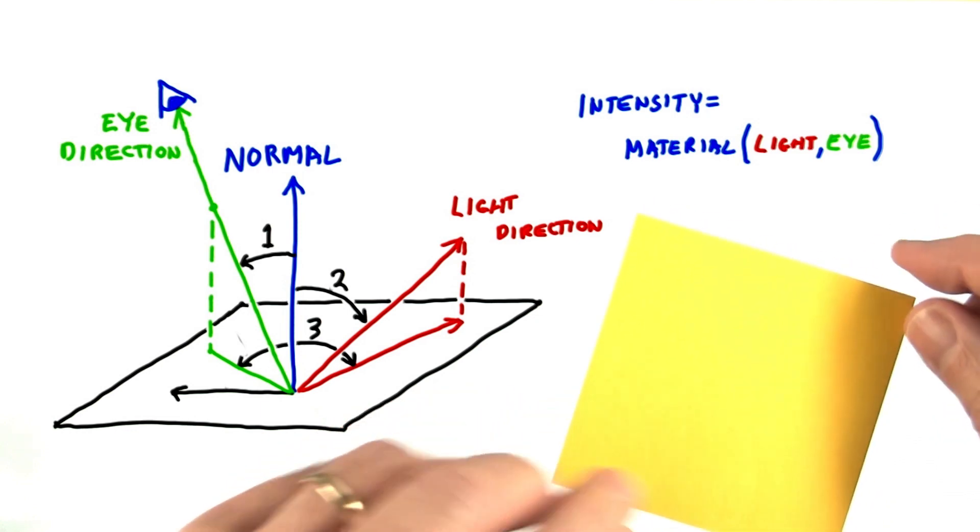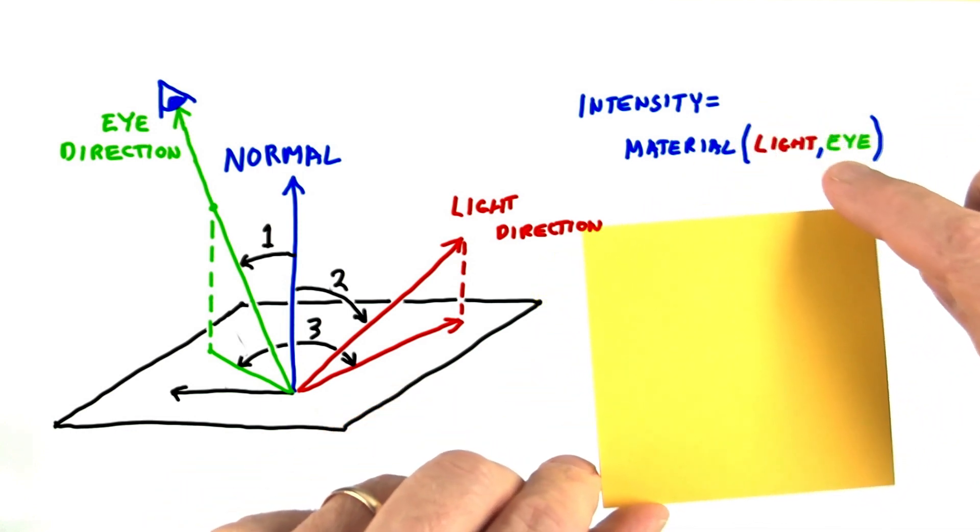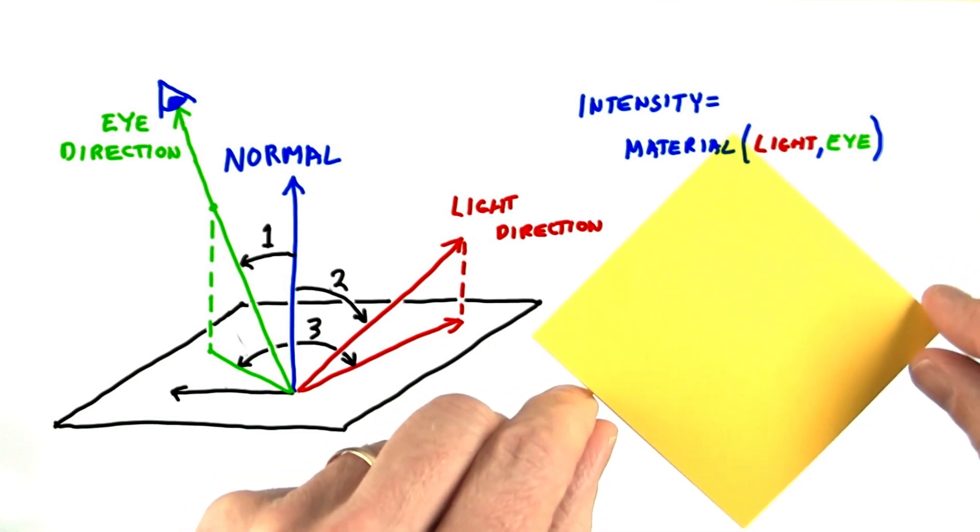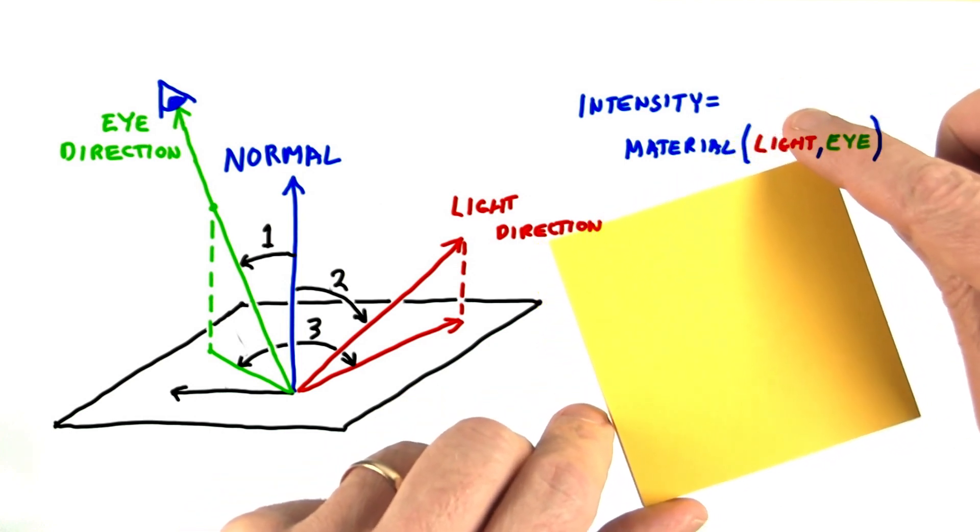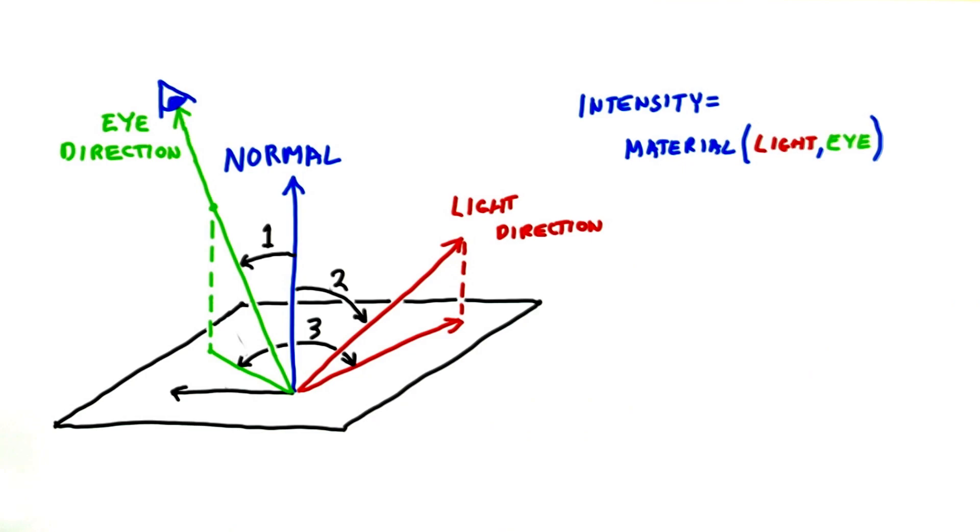For example, if you put a sheet of paper on a tabletop and rotate it, both the light azimuth and eye azimuth angles change with respect to the paper, but the angle between the two remains the same. Most materials are fine with three numbers.